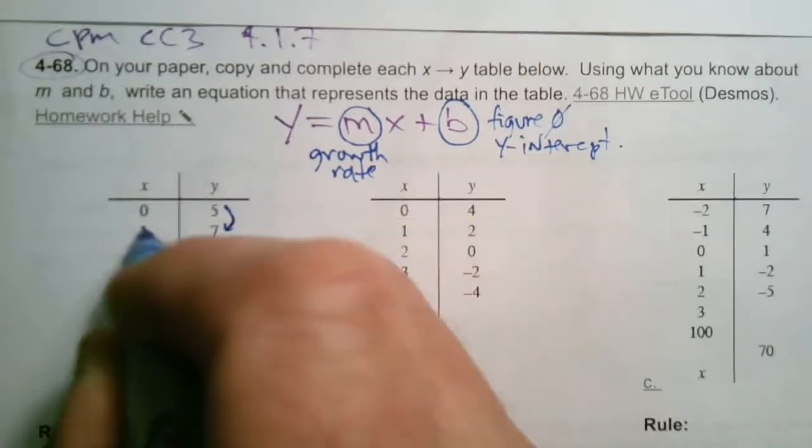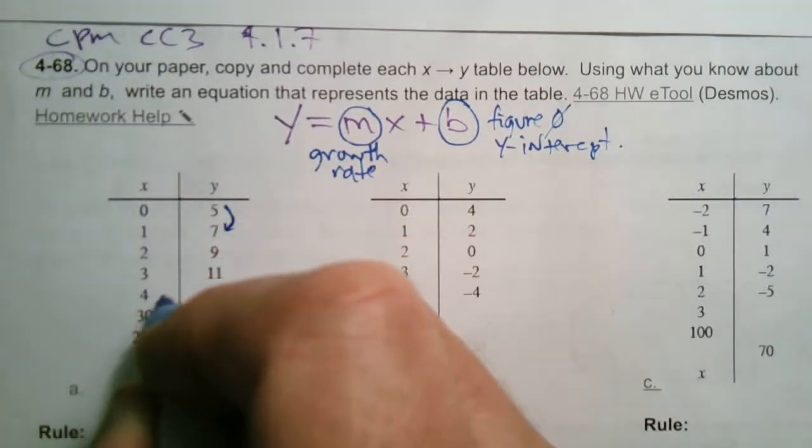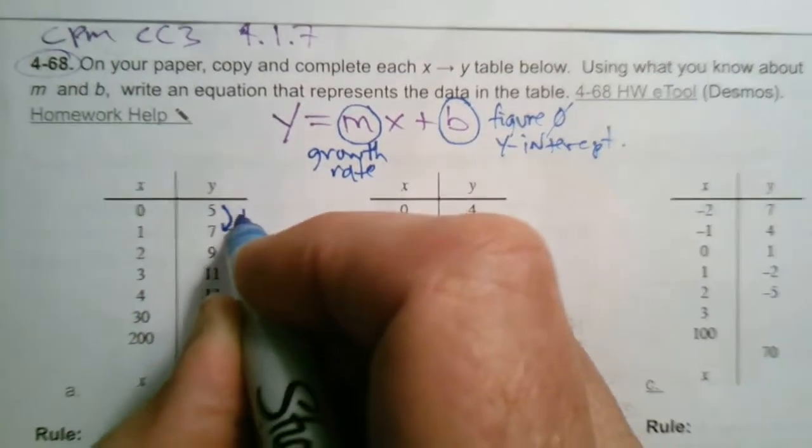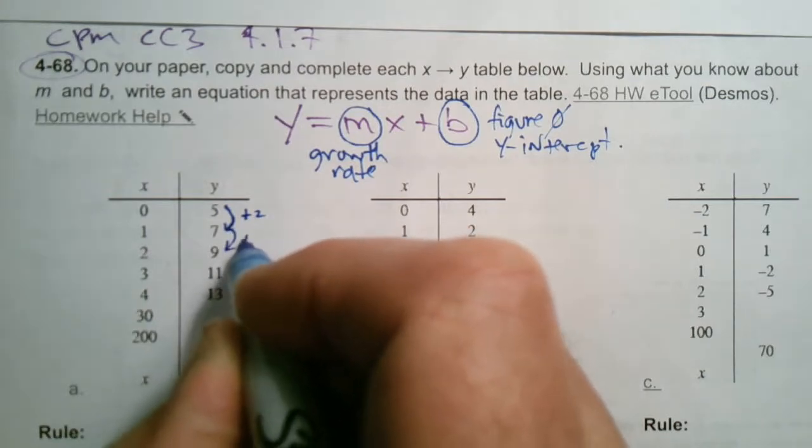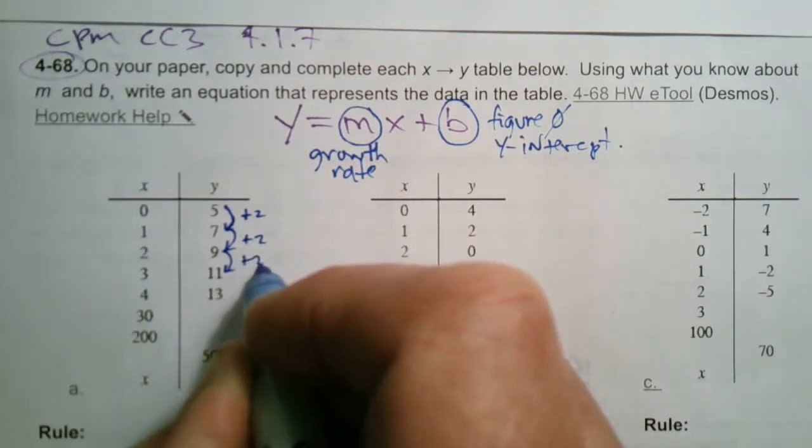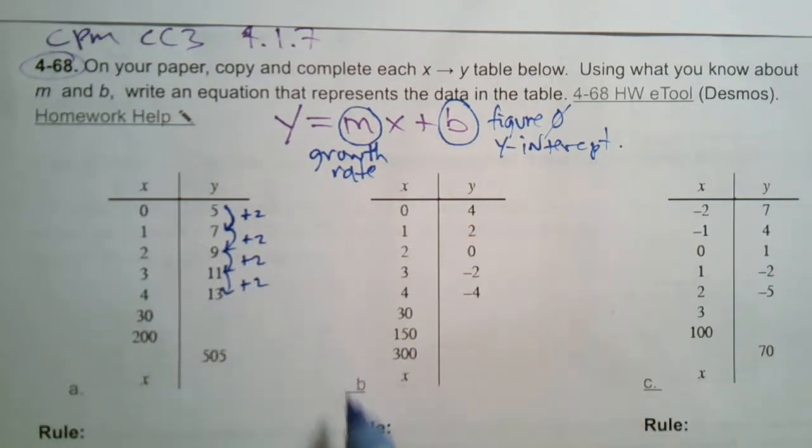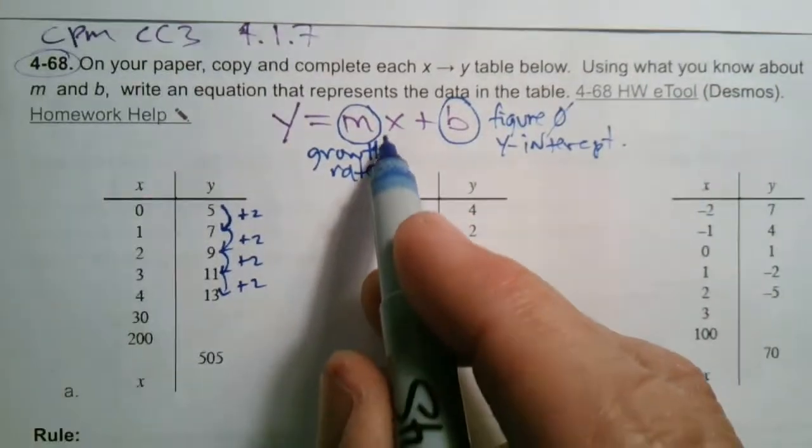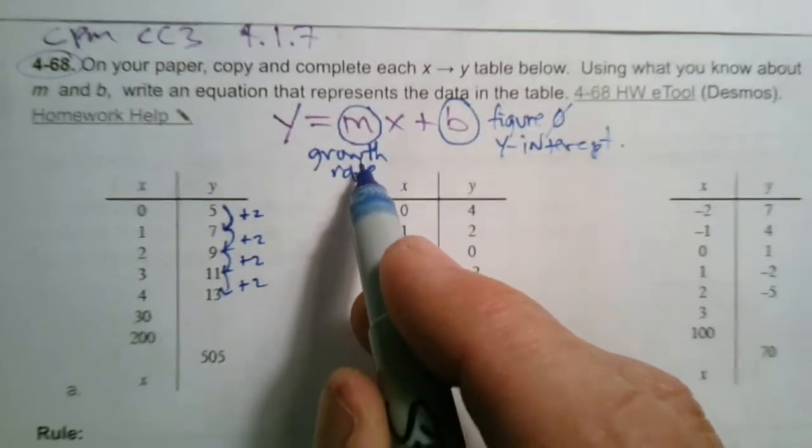So if I look at my growth, it's consistently growing by one over here. So what is the growth over here? Well, that's adding two, and again, adding two, and again, adding two, and again, adding two. So that right away tells me that that m is positive two.